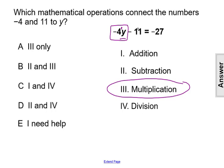Then after that, we have the number 11 with a minus sign in between the variable and 11. So we have negative 4y minus 11, and a minus sign represents subtraction. So the 11 is being subtracted from the variable y.